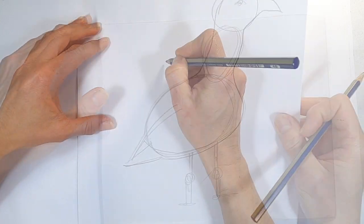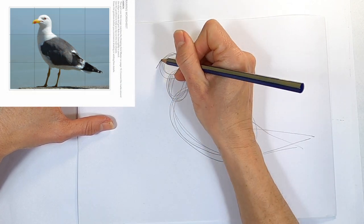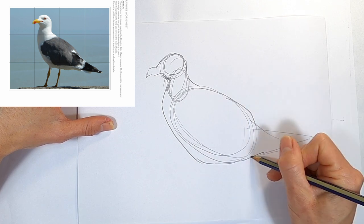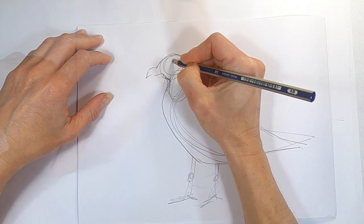You can use this technique of simplifying things into basic shapes for pretty much anything you want to draw. There are more images of seabirds in the workbook. They also have a grid overlay and matching blank grid if you want to do a really accurate representational drawing, or you might like to research your own images to draw from.